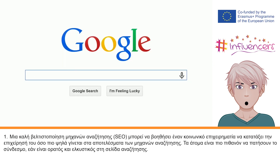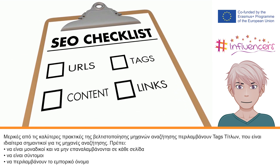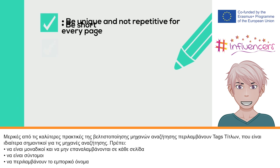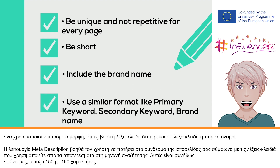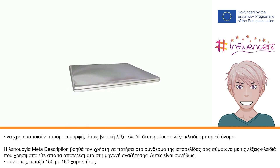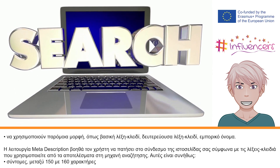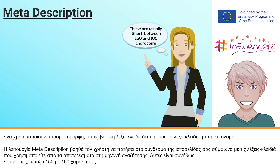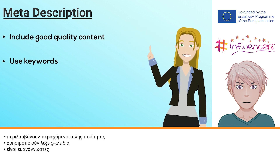People are more likely to click through the link if it is visible and appealing in the search webpage. Some SEO best practices include title tags, which are particularly important for search engines. These must be unique and not repetitive for every page, be short, include brand names, and use a familiar format like primary keywords, secondary keywords, and brand names. Meta descriptions help the user to click on your website's link according to the keywords you use from the search engine results page. These are usually short, between 150 and 160 characters, include good quality content, use keywords, and are easy to read.